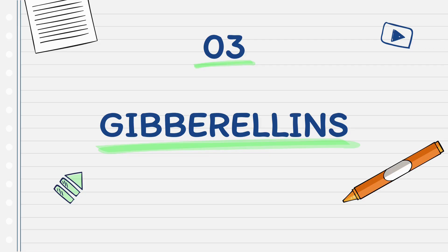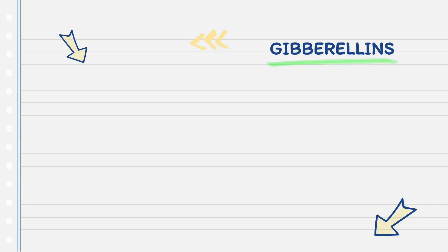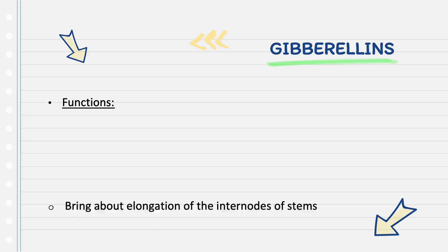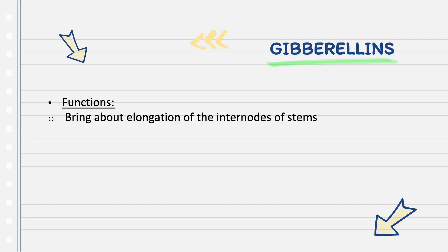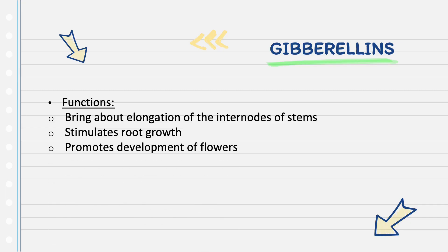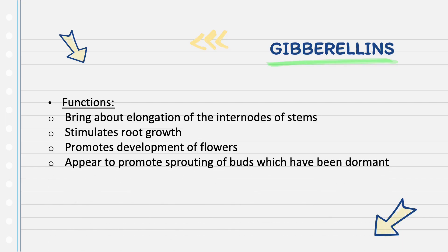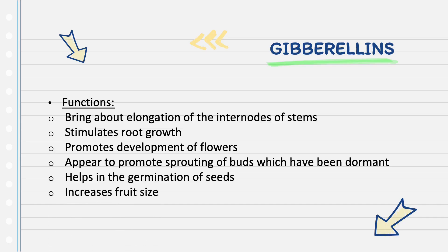Next let's look at gibberellins. Gibberellins promote the elongation of internodes of stems, stimulate root growth, and promote the development of flowers. They also appear to promote sprouting of buds which have been dormant, and help in the germination of seeds as well as increase fruit size.